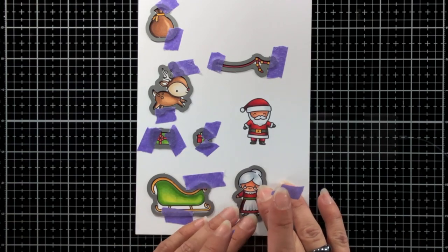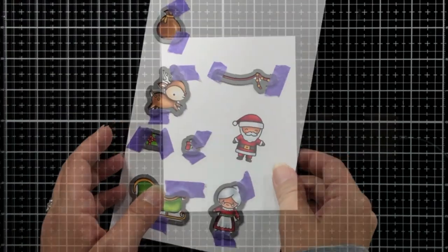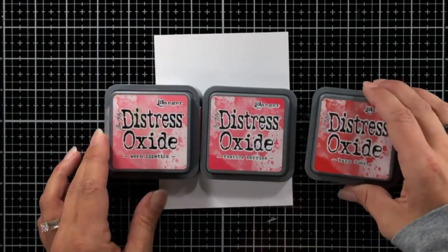Then just taking the coordinating dies, lining them up with my original panel where I colored the images, hold them down with some purple tape and run that through the die cut machine.